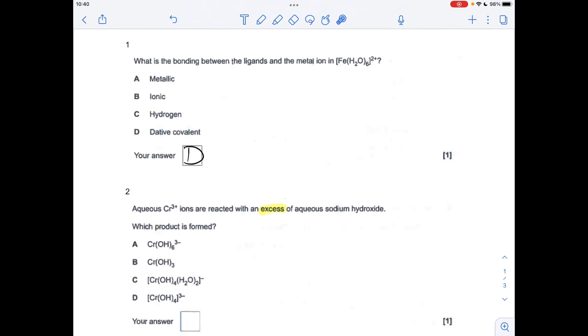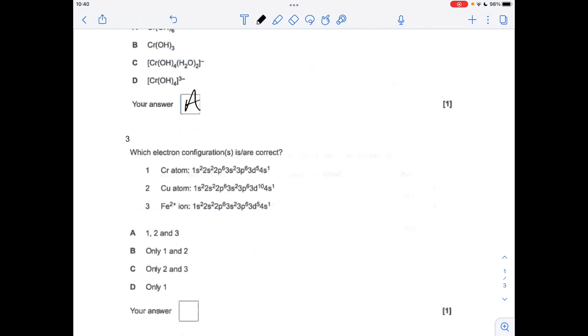Question three: which of these electron configurations are correct? The chromium atom is that, the copper atom is that, and for number three you'll notice I've written up the electron configuration of the iron atom. So to become the 2+ ion it needs to lose these two electrons, the 4s2 electrons, so that wouldn't give that configuration. So three was wrong, which means that only one and two are correct, so the answer was B.